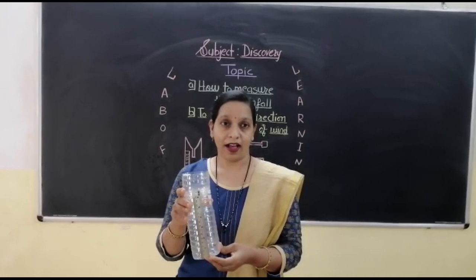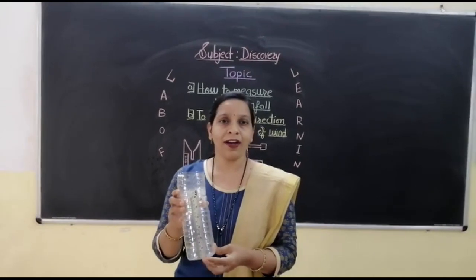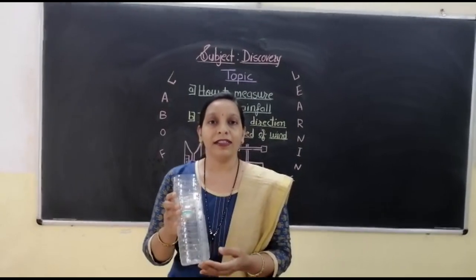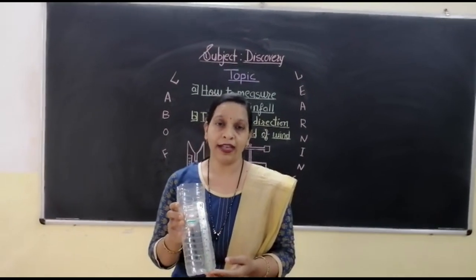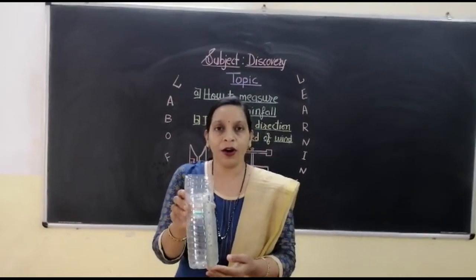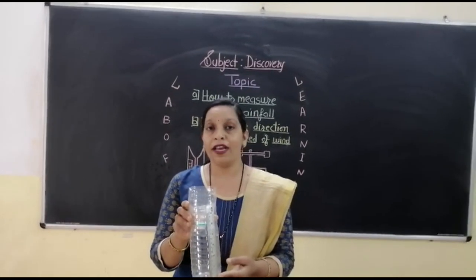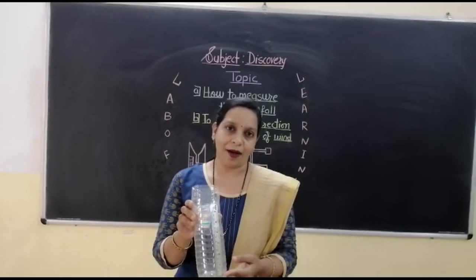This is our instrument which we have prepared. With the help of this, we can measure the rainfall in our area. As you have prepared, you can measure the rainfall in your area. This is the instrument which is called a rain gauge. So it is your own rain gauge with the help of which you can measure the rainfall in your area.